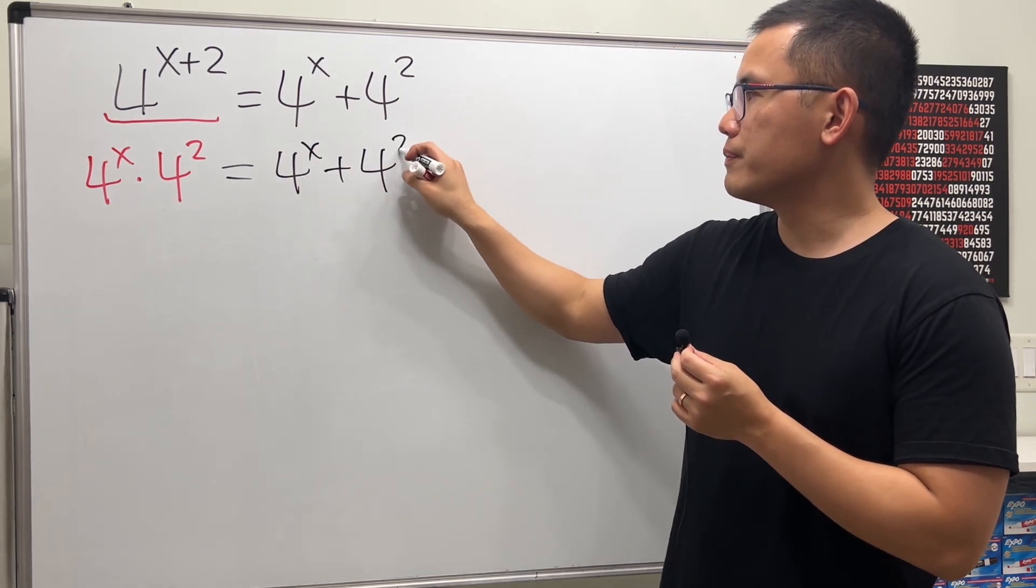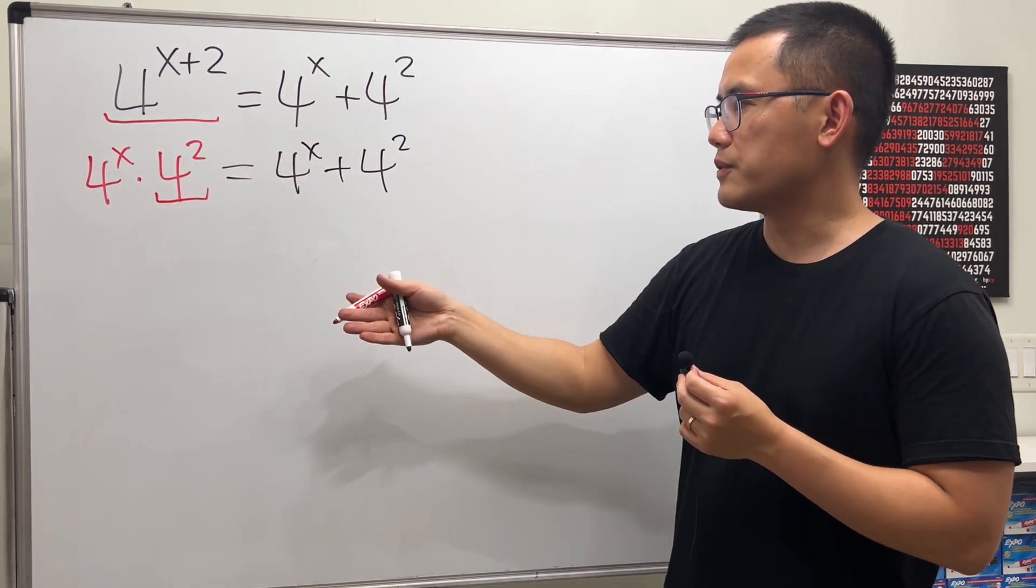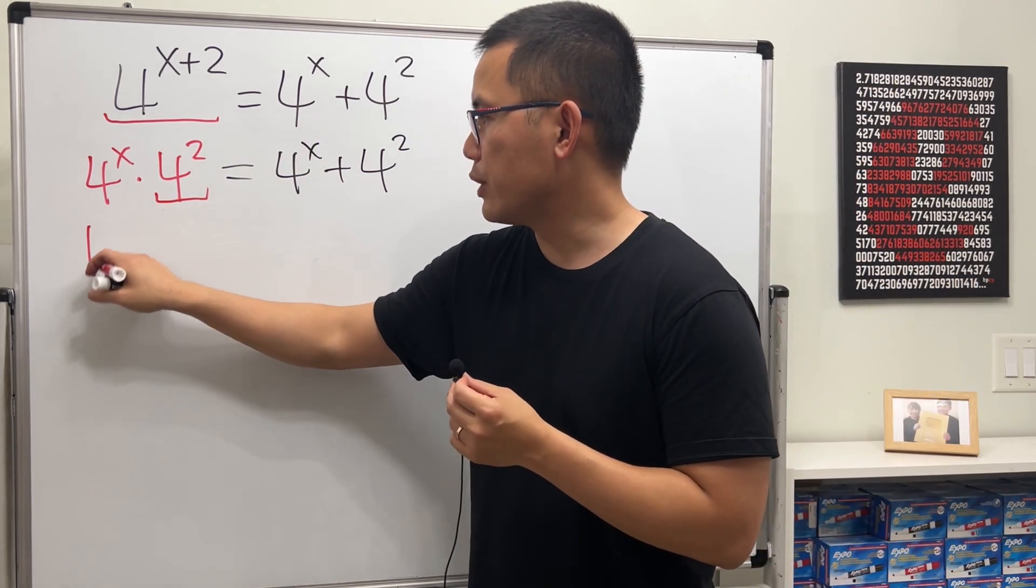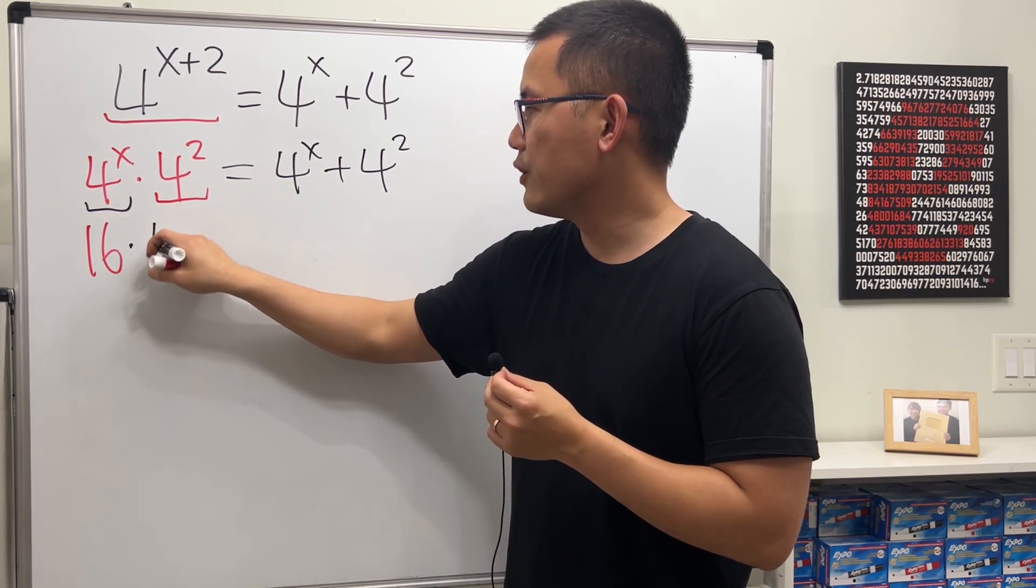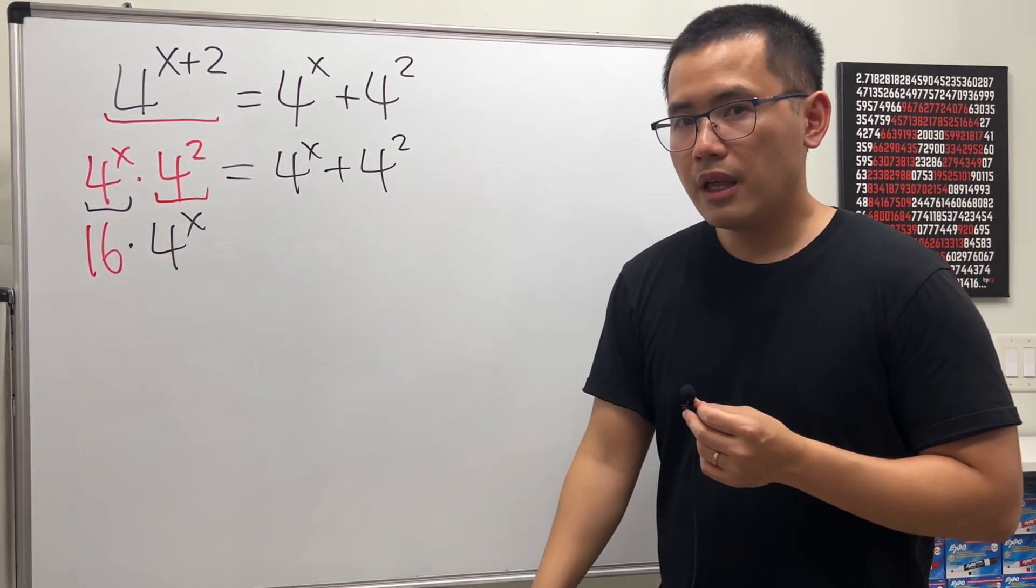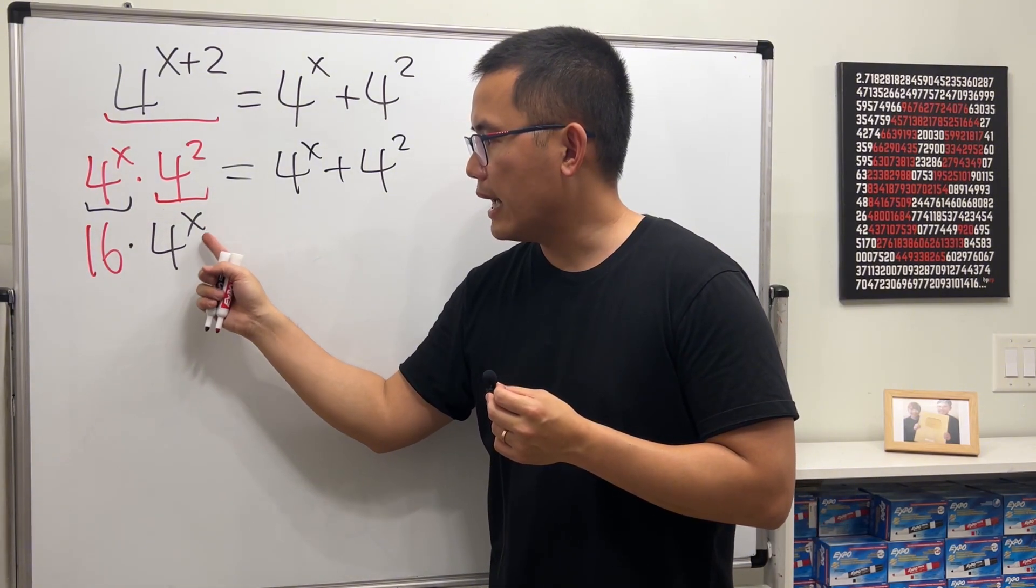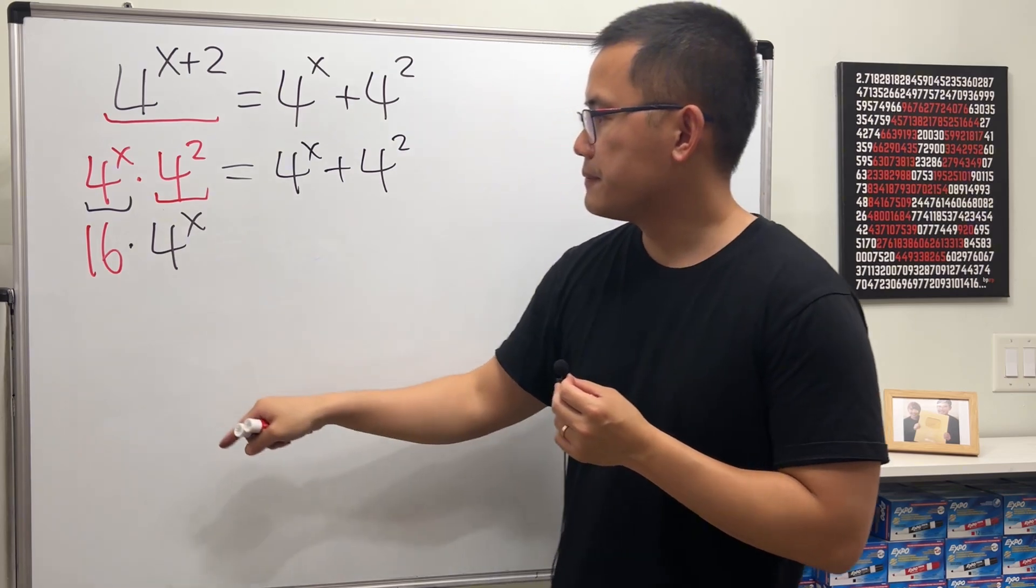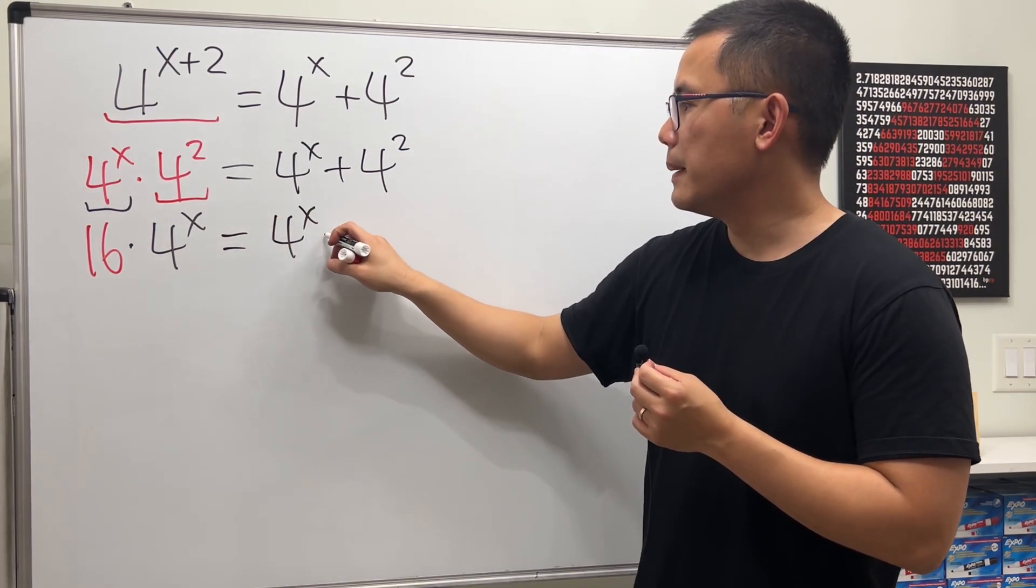Let's work this out. 4^2 is just 4 times 4, which is 16. Here we multiply 16 by 4^x, and keep in mind, do not multiply the 16 and the 4 because the 4 has the x. This equals 4^x plus 4^2, which is another 16.